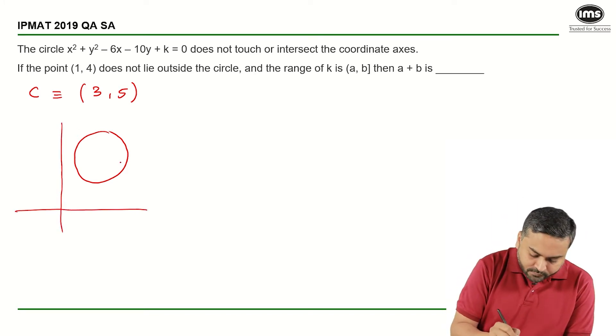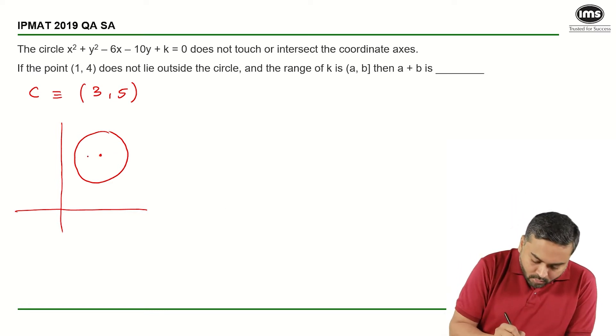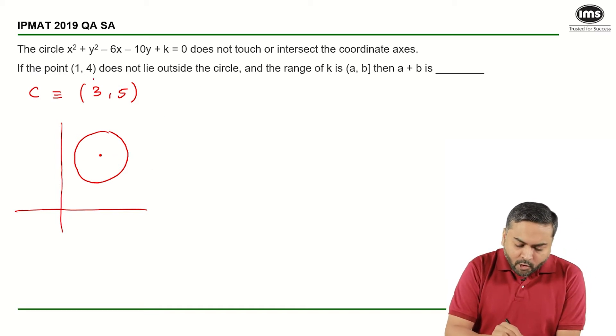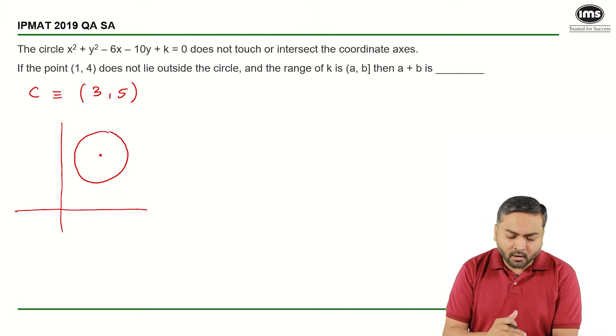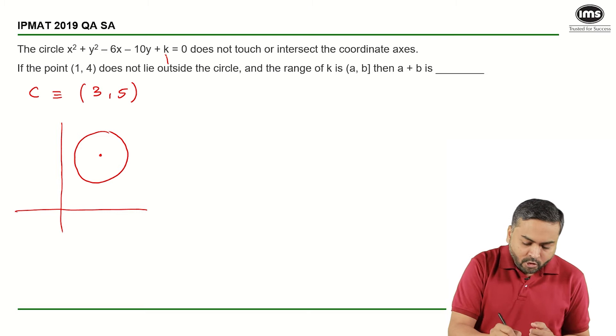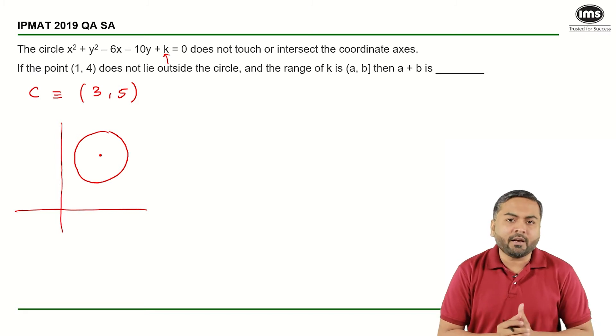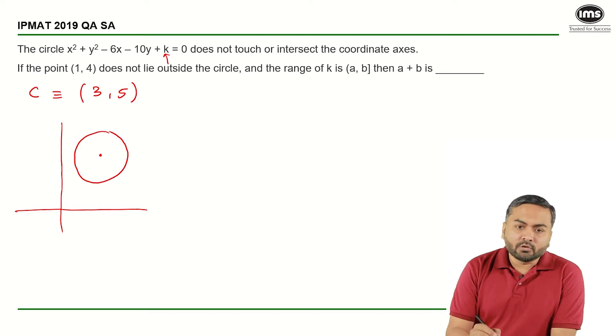Let us draw the quadrant. Now this center, the coordinates are 3 comma 5. And it says that if the point 1 comma 4 does not lie outside the circle, which means this point can lie on the circumference or it can lie within the circle, but it cannot lie outside the circle. Then the range of k is given by a comma b. A is a round bracket and b has a square bracket, which means there is a hint for us here that b will be inclusive and a will not be inclusive.